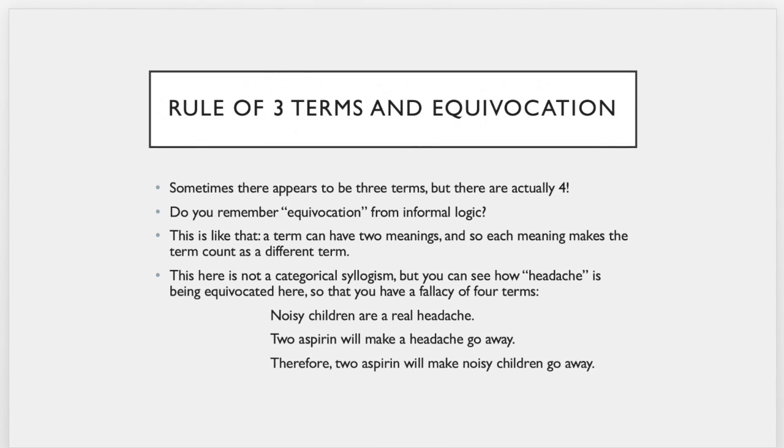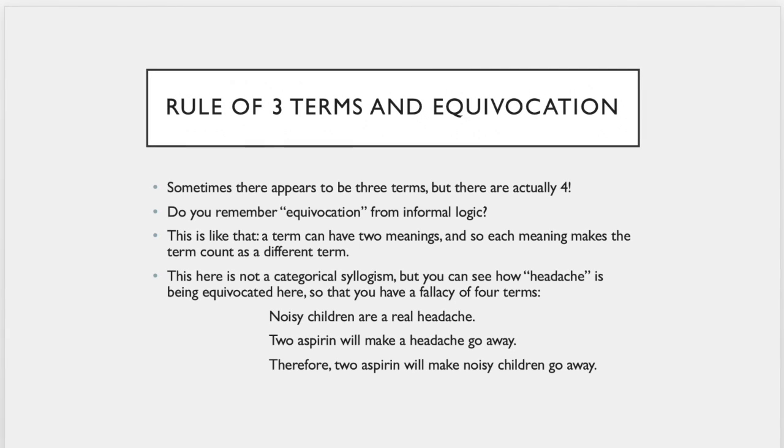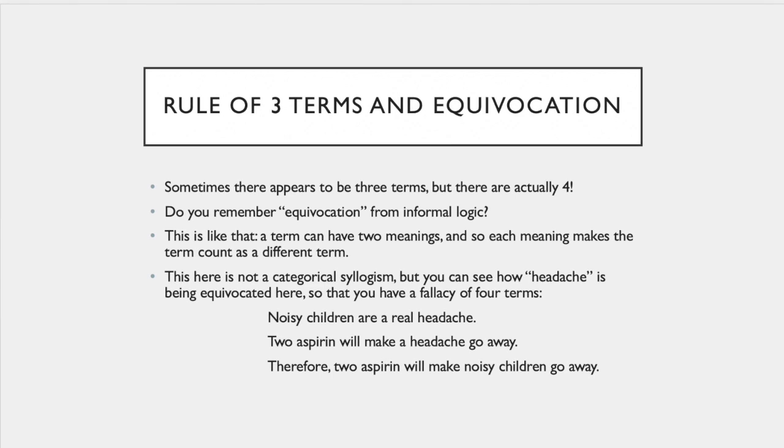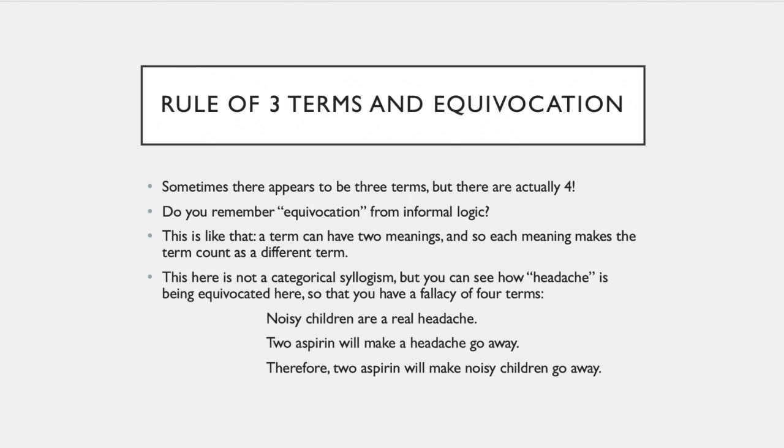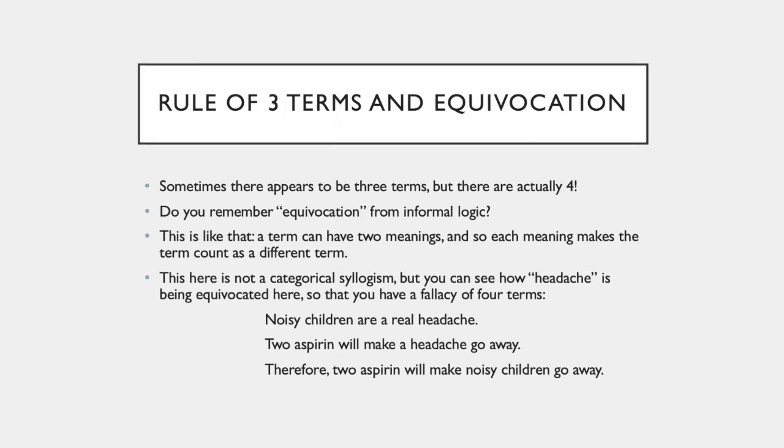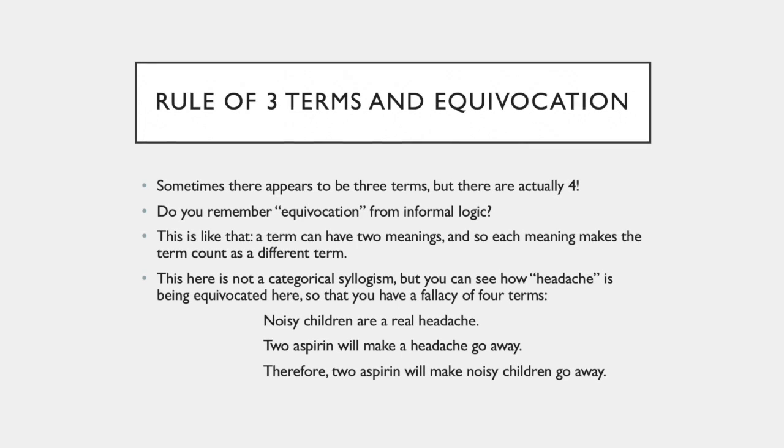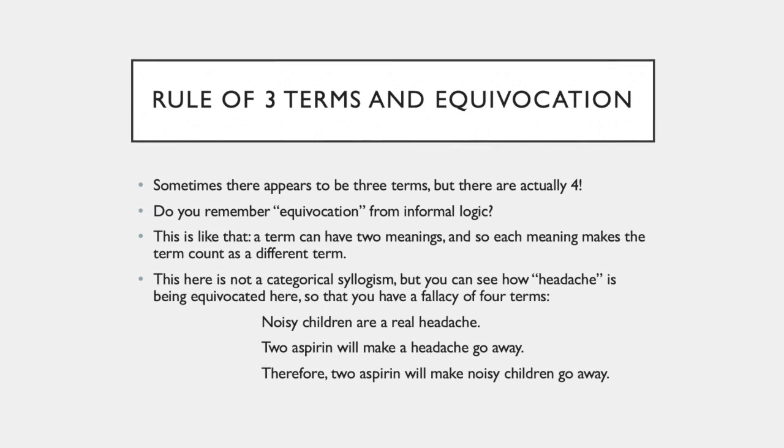So you remember possibly equivocation from last year's logic class. You equivocate terms when you have two terms but use them in different ways. So even if it looks like there are three terms being used in a syllogism, be sure that all three terms are being used in the same way.